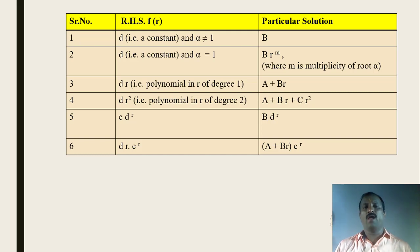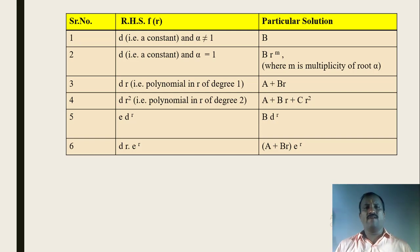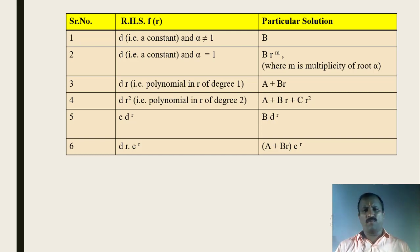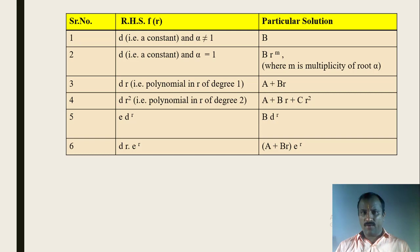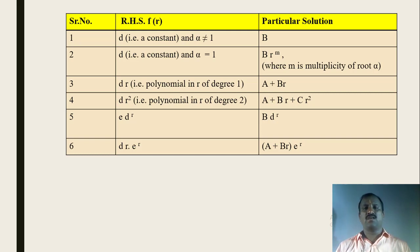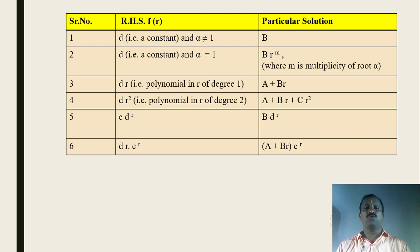Case 4: if the RHS is in the form d·r², meaning a constant times r raised to 2, that is the RHS is a polynomial in r of degree 2, then its particular solution is directly A + B·r + C·r², where capital A, capital B, and capital C are constants. We will find the values of these constants from the examples.